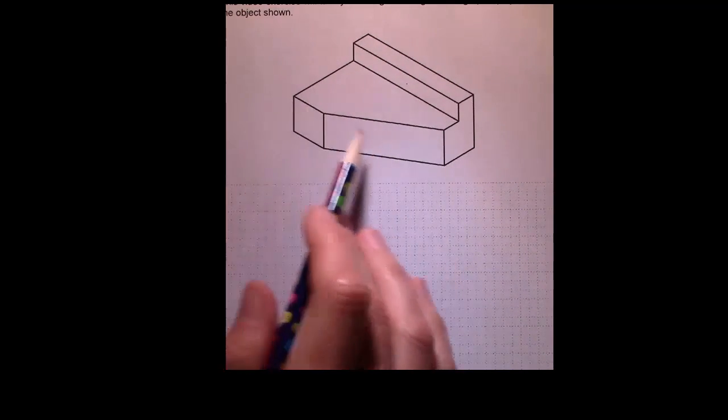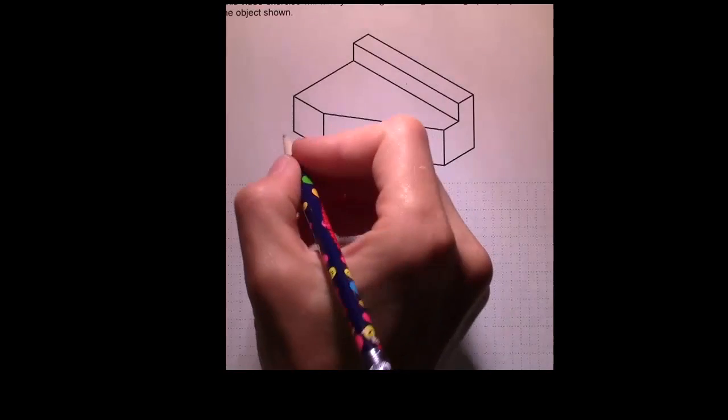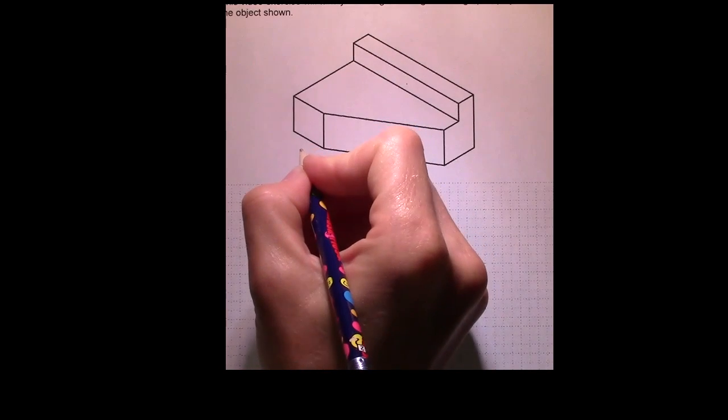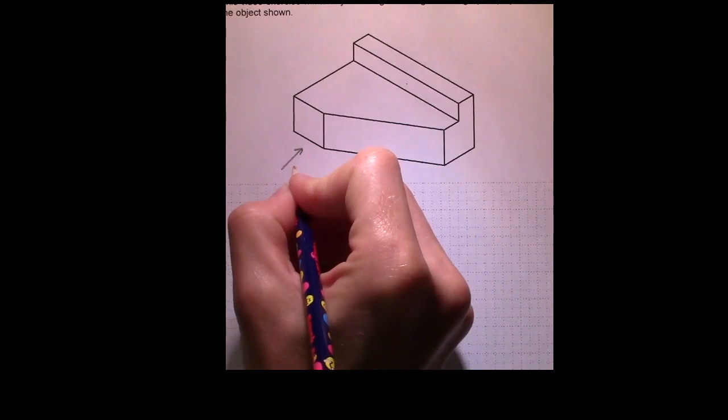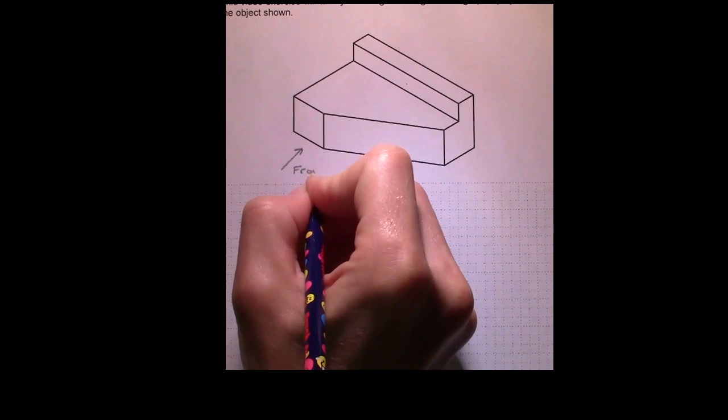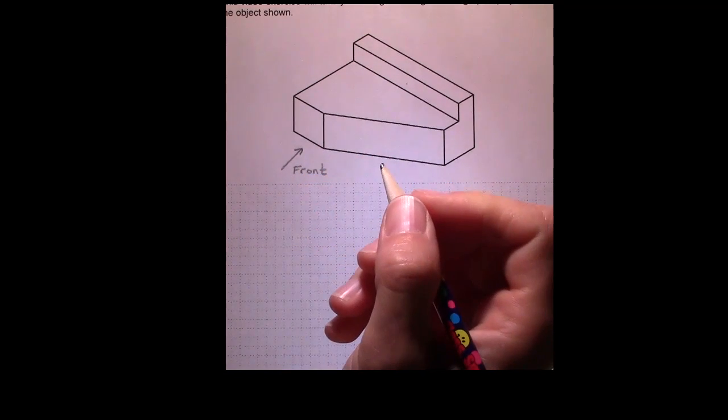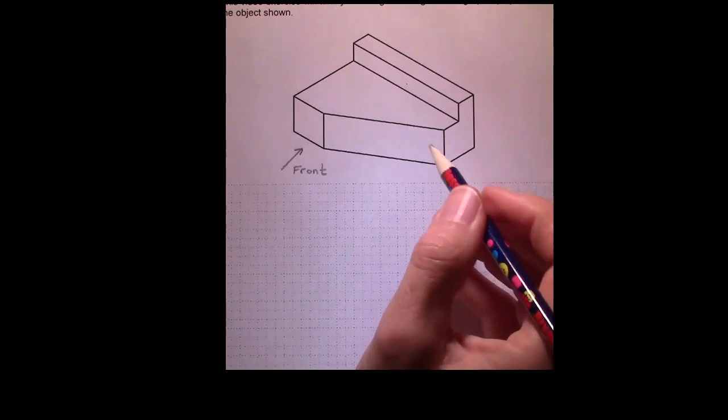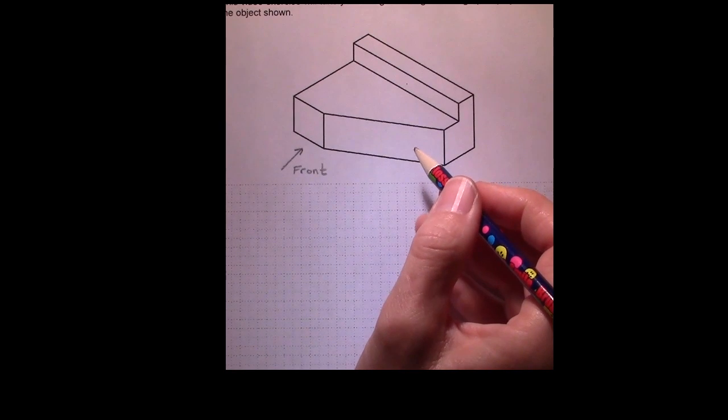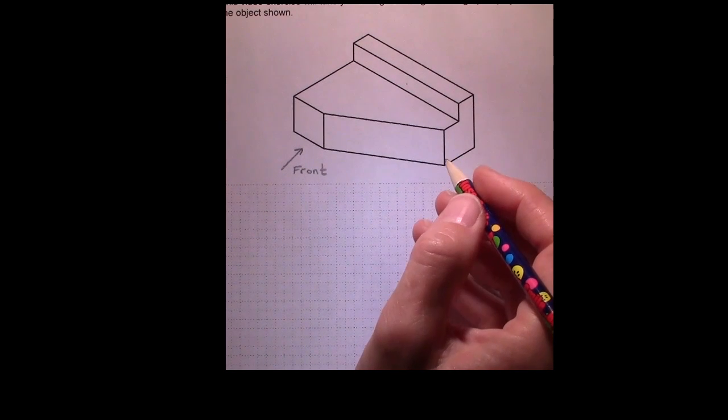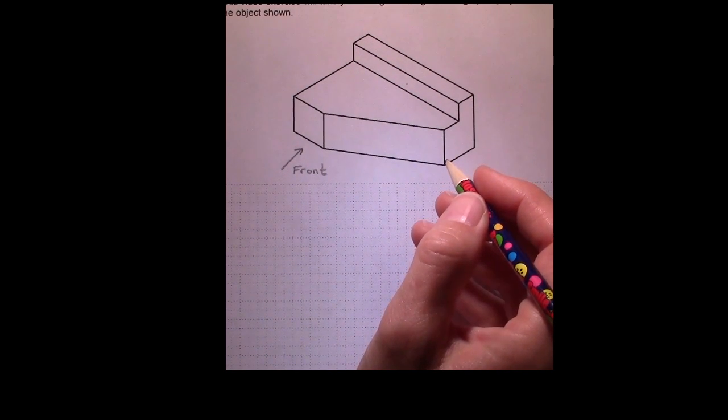The way this part is oriented, you would be tempted to call this your front view because that's what looks like the front view. In this case, this is a little more complex because the front view is really the view that shows the most about the object. But if you look in this direction, really all you see is a rectangle.